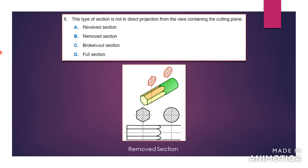Number eight says: this type of section is not in direct projection from the view containing the cutting plane. The cutting plane of this object is shown by the center line right here. However, the view of the object is not in the same cutting plane because it is raised above. If you wanted it to be in the same cutting plane, this line would have to be lowered to be in line with this. But the person raised it out of the drawing, so it would be a removed section. The removed section is not a direct projection of the cutting plane used before.